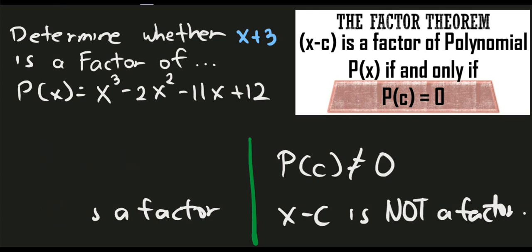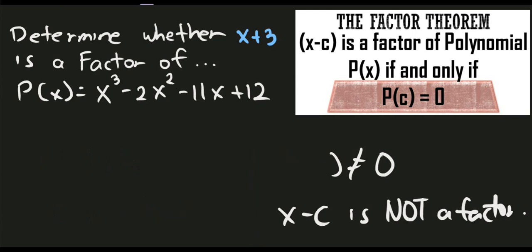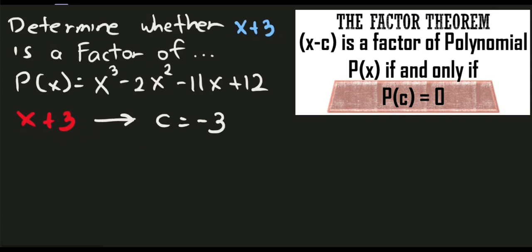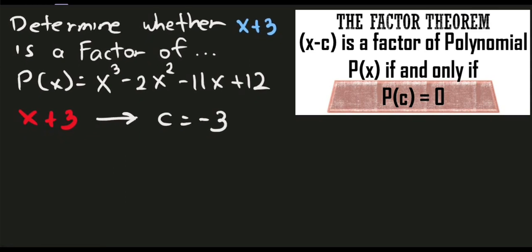To answer this, we simply use evaluation. Let's evaluate the given problem and identify the final answer. If it is 0, we have a factor. Since we have x plus 3, our first task is to identify the value of c. The value of c if we have x plus 3 is negative 3. Just change the sign. So let's plug in the value of negative 3 to our given polynomial.